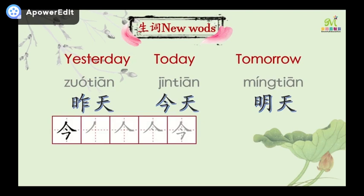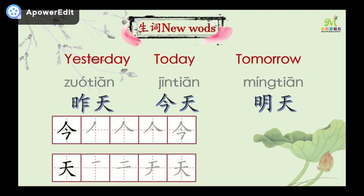Now let's learn how to write 今 and 天. Follow me. 今 — one, two, three, four. It's so easy. Next: 天 — one, two, three, four. 今天 — today.